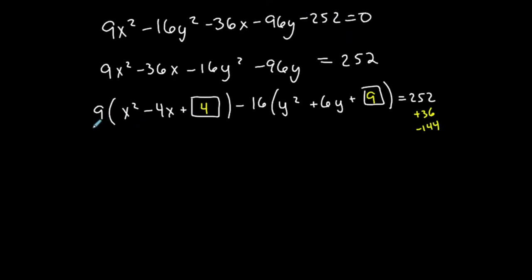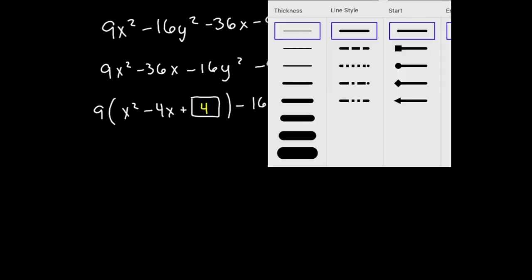9 times 4 is 36. So I added 36 to the left, I add 36 to the right. Negative 16 times 9 is negative 144. So I subtracted 144 to the left, so I subtract 144 to the right. So just be careful with hyperbolas when that negative pops up. All right. So let's keep going then. Let's finish this off.